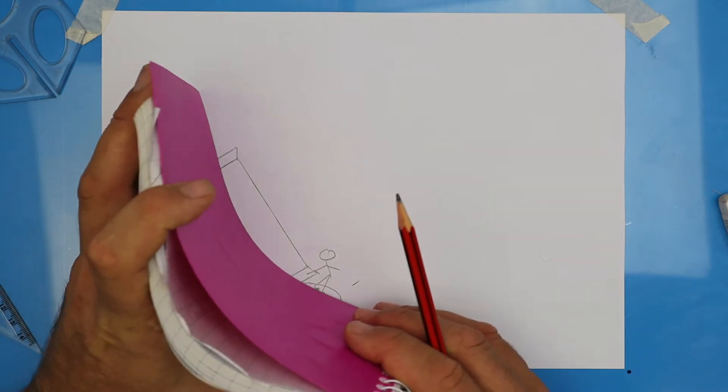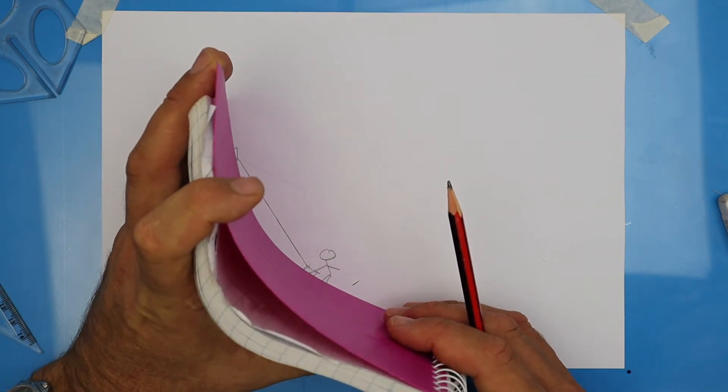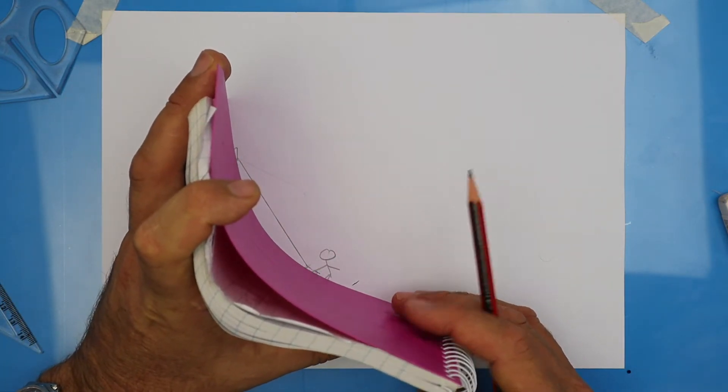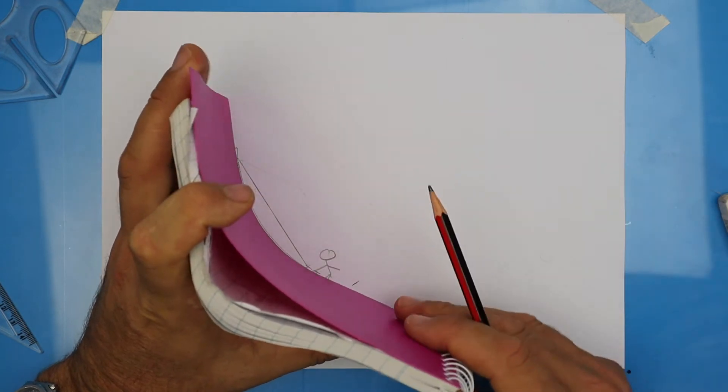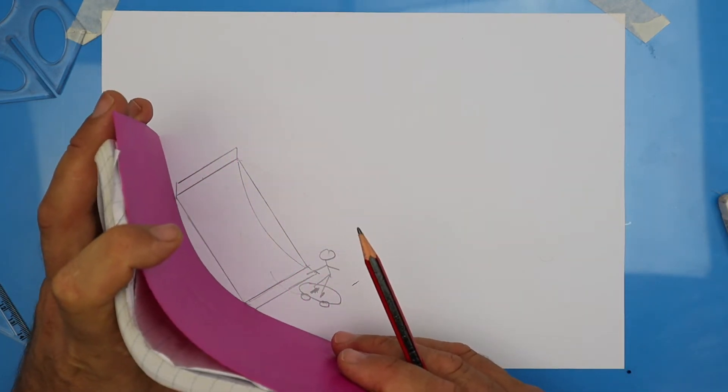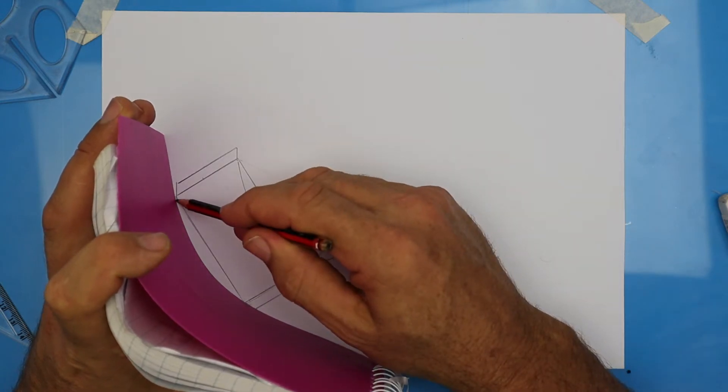Here I'm showing you how to make the ramp even smoother. We're going to get rid of the bump using an exercise book, or in this case, a notepad. Just bend it to the shape you want. Make sure you keep the same shape when you mark the front one.